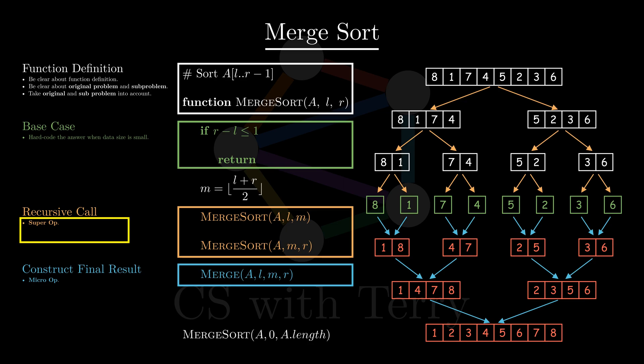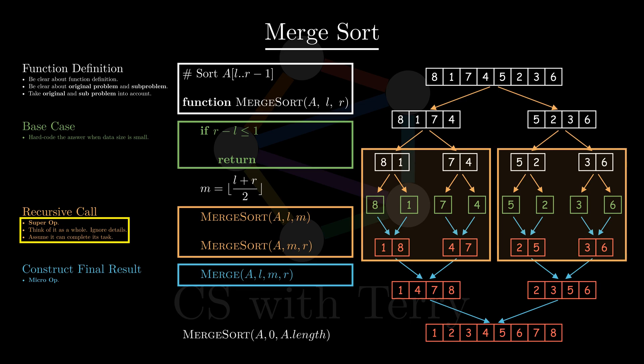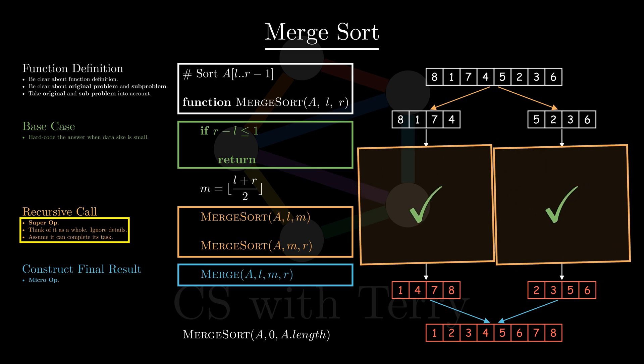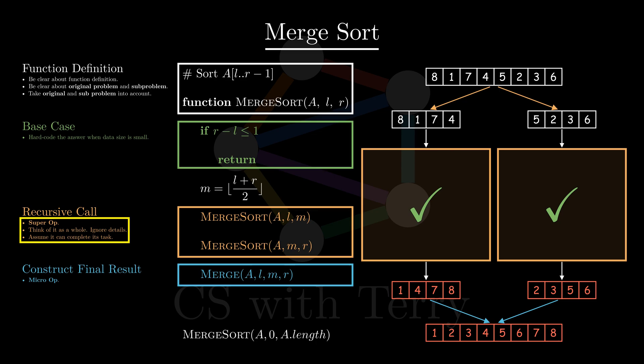So how do we avoid this trap? It is in fact quite simple. We need to think of the super operation as a whole, or as an atomic operation. In other words, we need to ignore all the details in the super operation. As long as we know what it can accomplish as a whole, and have faith it can finish its task — this is called a leap of faith. By treating the super operation as a single step, we no longer care about its internal logic, but just assume it is correct. This is how we can cure recursion sickness.